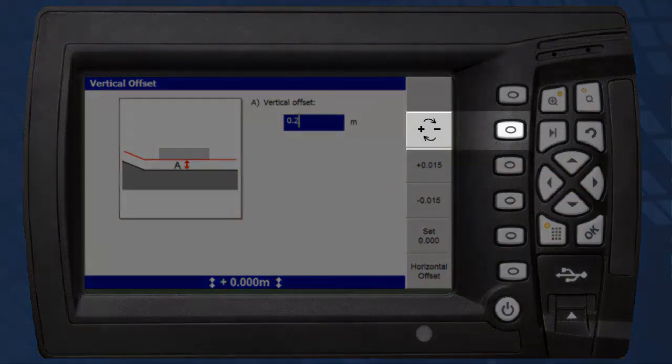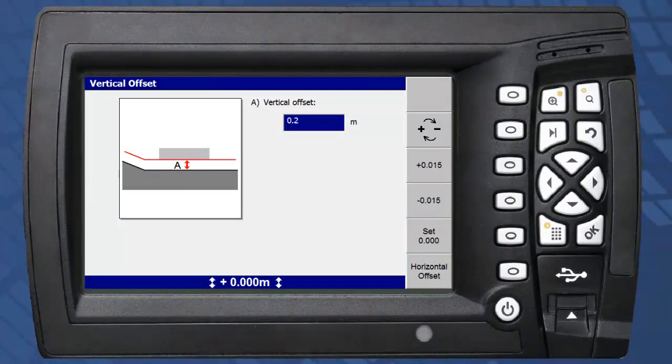The plus and minus soft key toggles the vertical offset between below, or minus, and above, plus, the design surface.